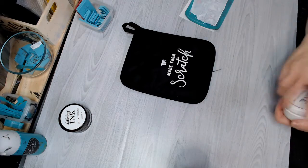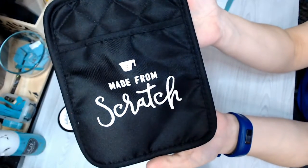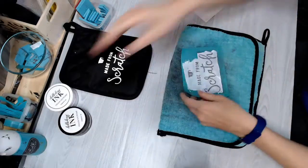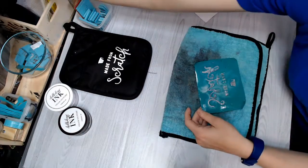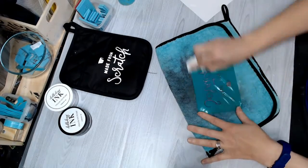We will heat set this once it is dry. You can heat set it with your household iron or with a heat press or an easy press, whatever you have. I'm going to wash that off because you do not want the ink to dry in your silkscreen stencil. You want to clean it out so you can use it again.